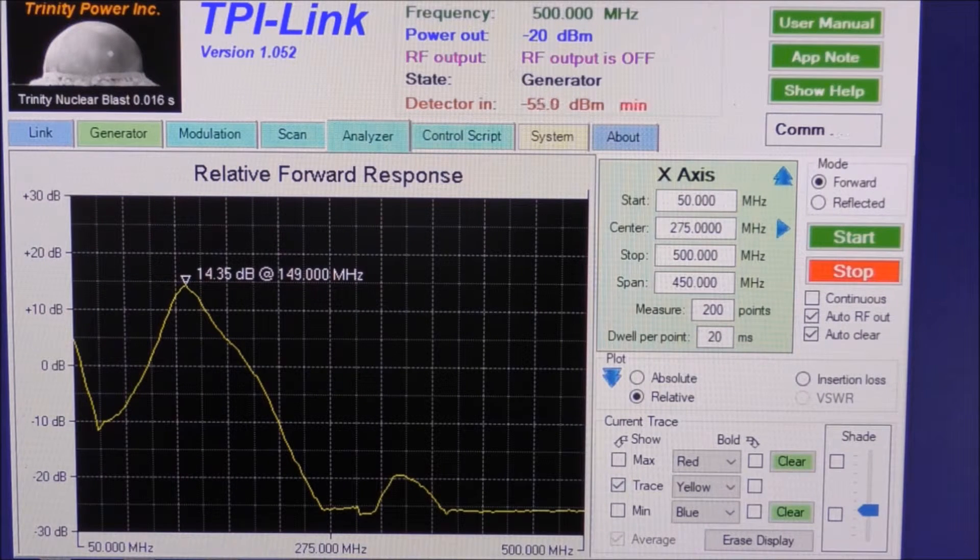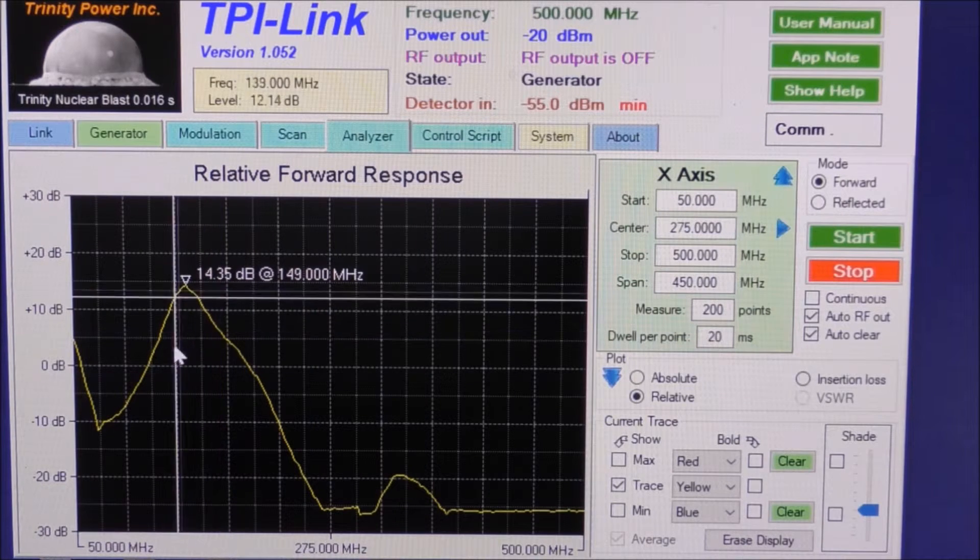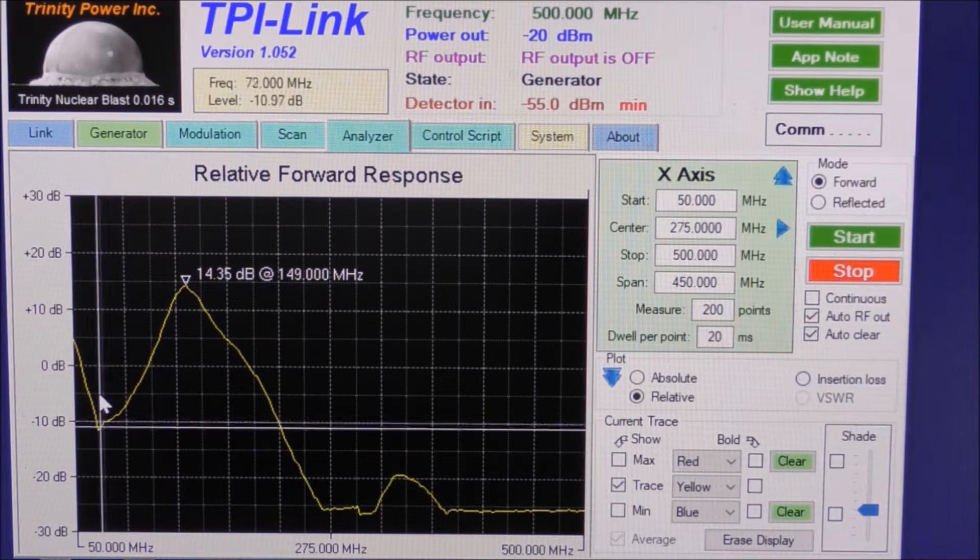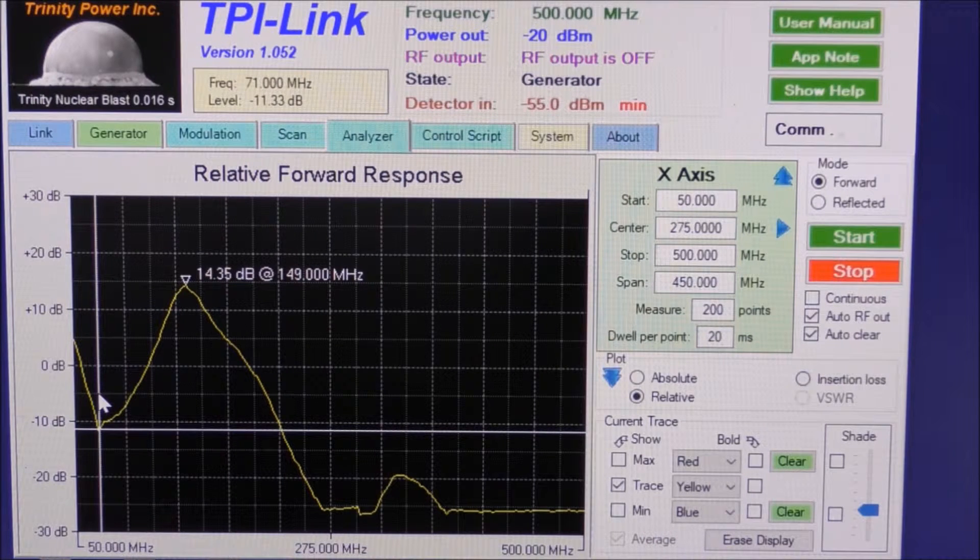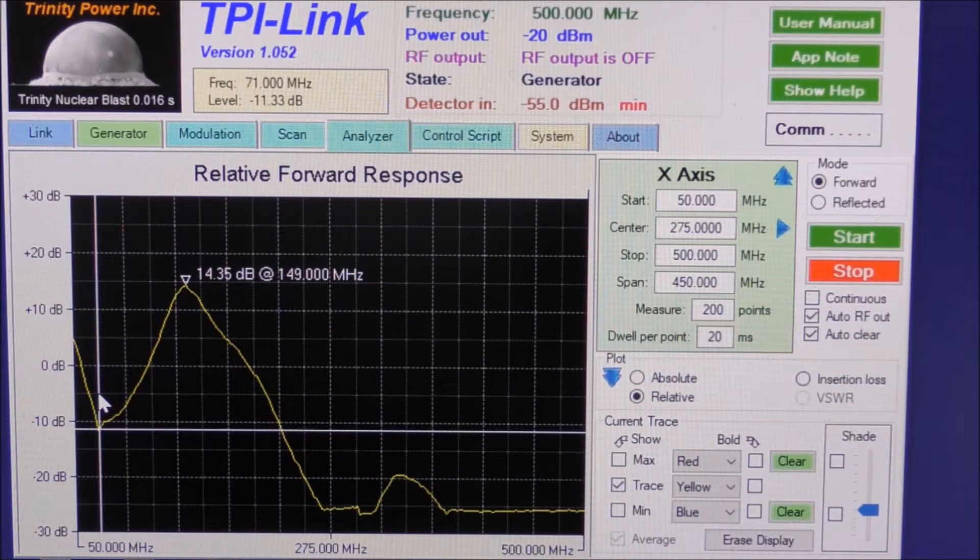Now this is a sweep of the entire spectrum from 50 MHz to 500. We can see a peak there it's saying 149 MHz. If we actually compress that it's actually a little bit lower in frequency. I tuned it for 147 MHz. And the gain is 14.35 dB. And what we've got here is if we actually move our cursor along now. There's a dip, quite a substantial dip at about 70 MHz which is sitting at minus 11 dB.